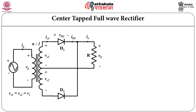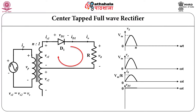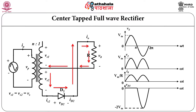In the center tap full wave rectifier, the things are different. It consists of a transformer with two phases, called a center tap transformer. There are two diodes and the load. During the positive cycle, D1 will be on and we will get a positive output. During negative half cycle, D1 will be off and D2 will be on, and you will get the positive voltage as shown in the timing waveform.